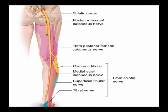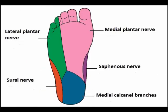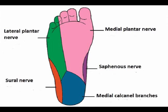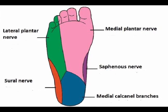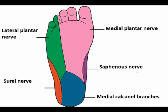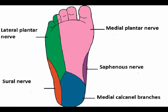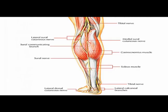These sensory branches provide sensation to the posterior lateral leg, lateral heel, lateral foot, medial heel, lateral aspect of the plantar surface of the foot, and medial aspect of the plantar surface of the foot.